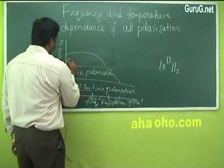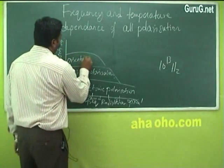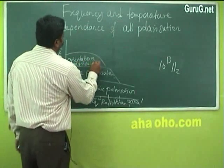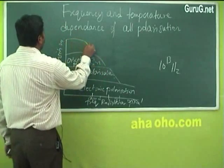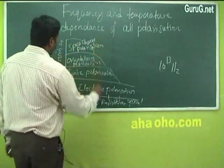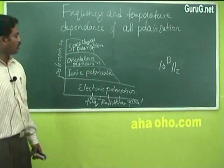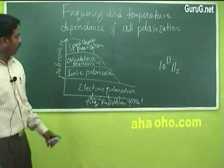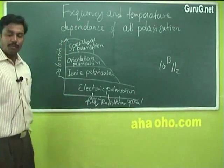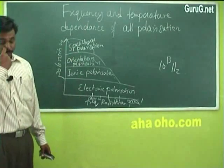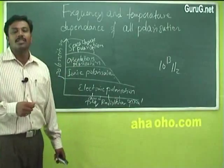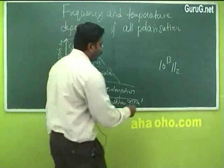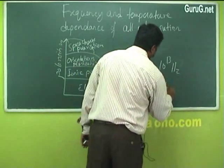The last type is space charge polarization. This space charge polarization occurs very, very slowly compared to all the other three polarizations, because the diffusion of atoms takes a bit longer in space charge polarization. So it may occur at a frequency of the order of 10^2 Hz.